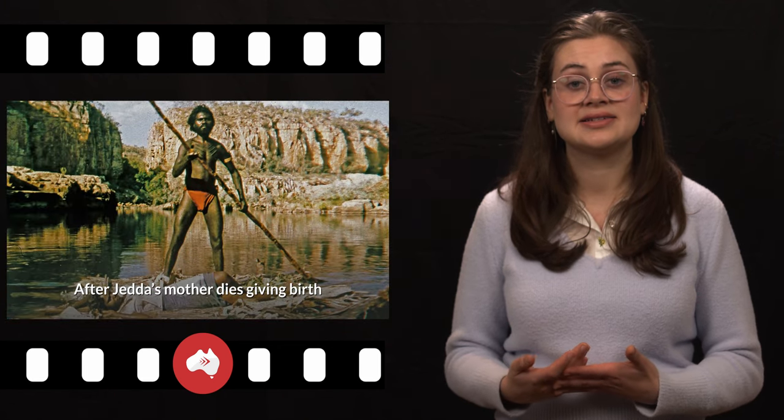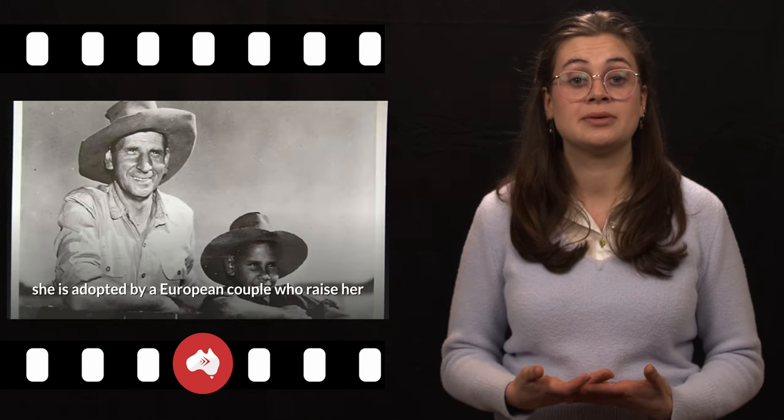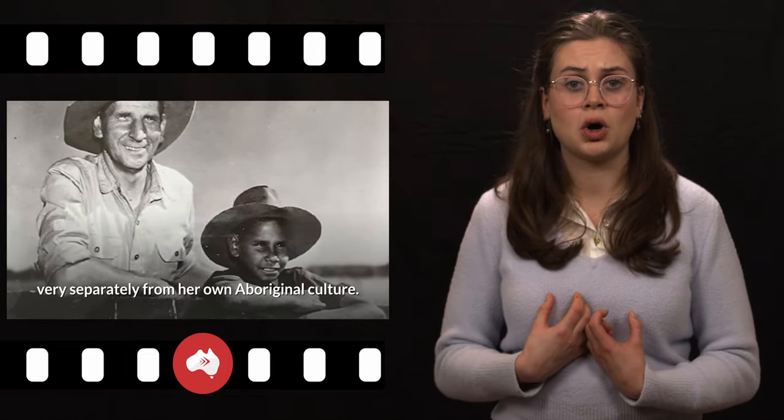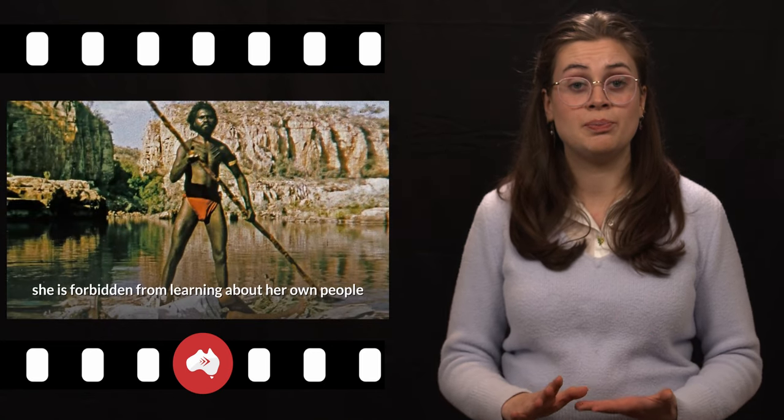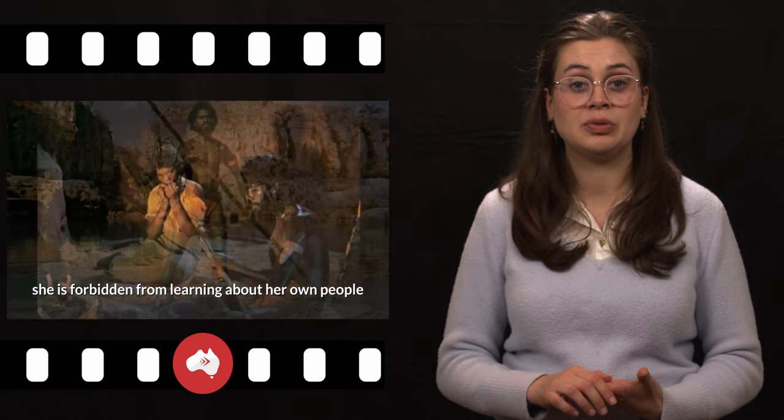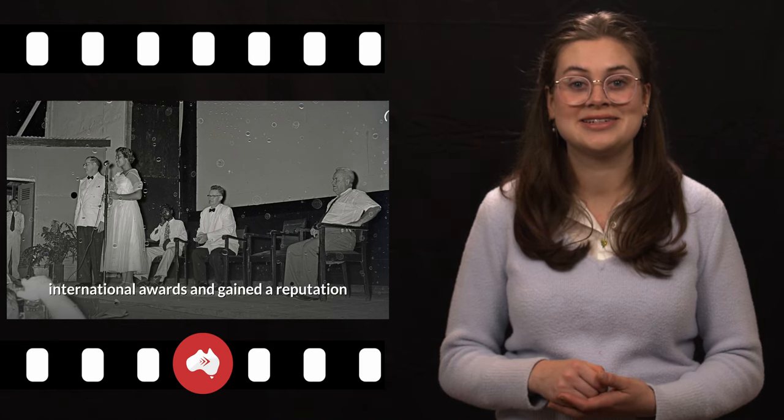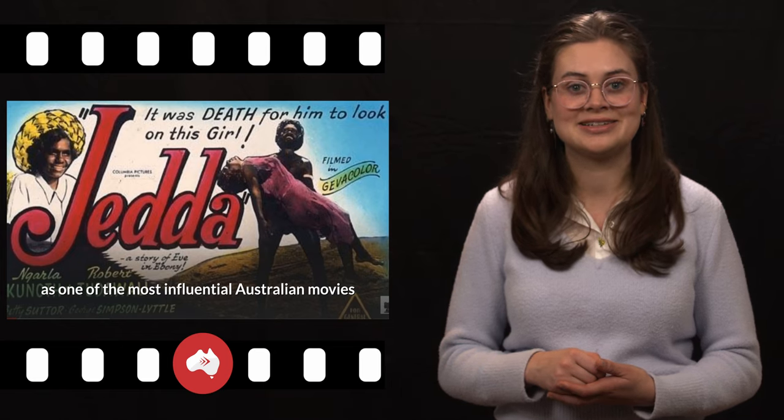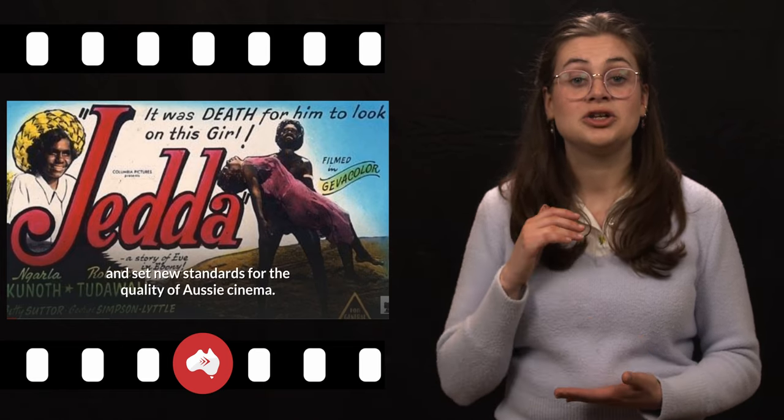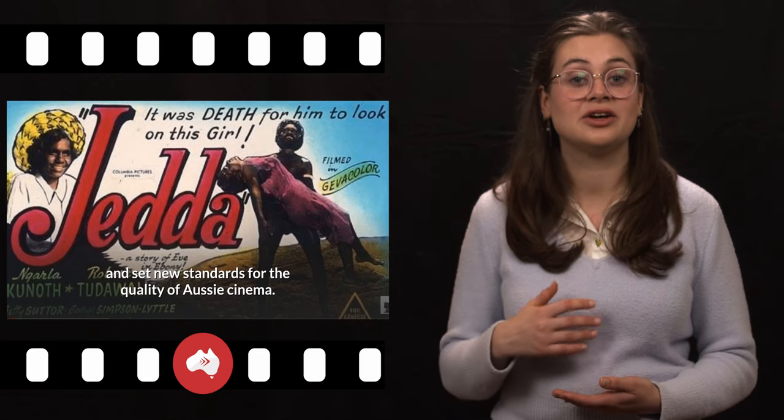After Jedda's mother dies giving birth, she is adopted by a European couple who raise her very separately from her own Aboriginal culture. When Jedda is older, she is forbidden from learning about her own people, but is one day lured and abducted by an Aboriginal man and her life takes a sharp turn into new territory. The film won a number of high-profile international awards and gained a reputation as one of the most influential Australian movies, considered to raise the bar and set new standards for the quality of Aussie cinema.